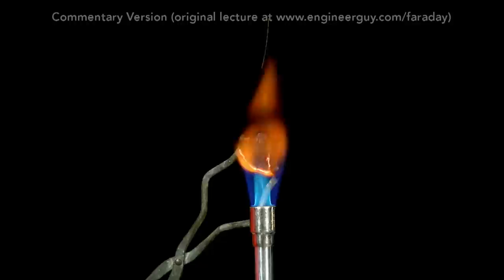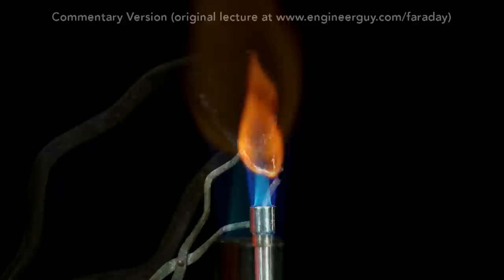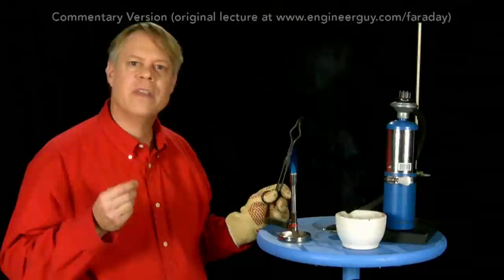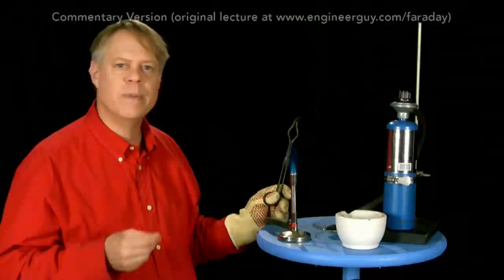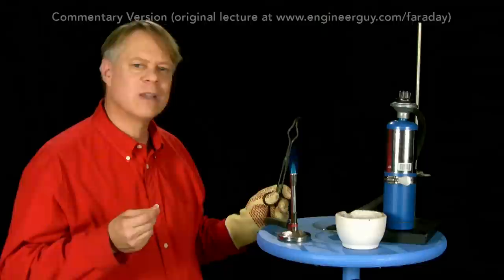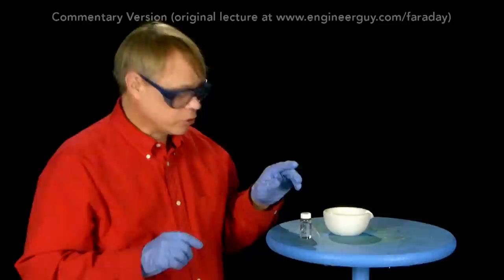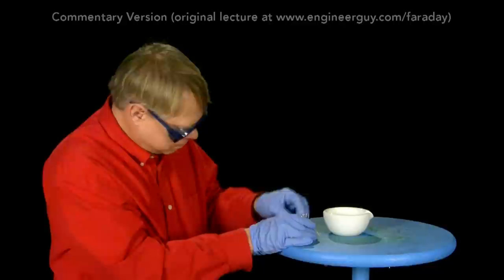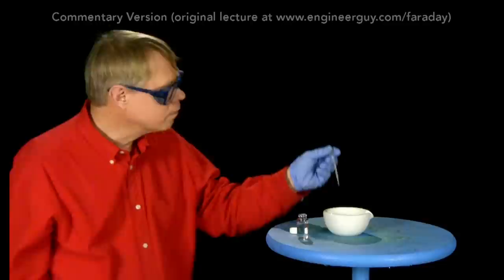Let's listen to Faraday comment on a kind of counterintuitive aspect of beauty in nature. Is it not beautiful to think that such a process is going on, and that such a dirty thing as charcoal can become so incandescent? You see, it comes to this, that all bright flames contain these solid particles. All things that burn and produce solid particles, either during the time they are burning, as in the candle, or immediately after being burnt, as in the case of the gunpowder and iron filings, all these things give us this glorious and beautiful light. So when Faraday says that a dirty thing like charcoal has beauty, he's really echoing some thoughts that he had in the first lecture, where he looked at decorative candles, which most people thought were beautiful, but they were bad burning, and argued that a normal candle is a beautiful thing. And also there's a subtle reminder here that science gives us a unified way to look at the natural world.